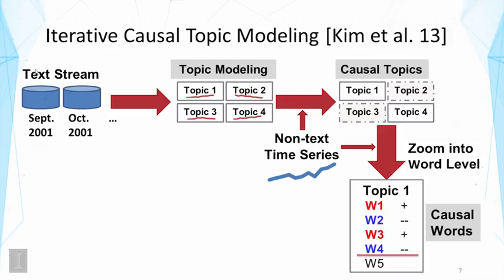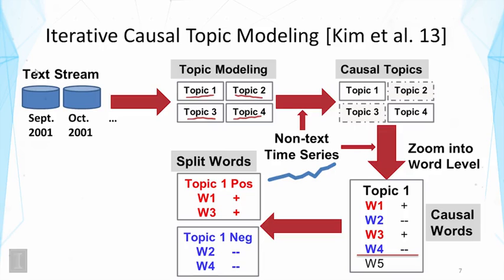But w2 and w4 might be negatively correlated. As a topic, it's not good to mix words with different correlations. So we separate them: red words with positive correlations (w1 and w3) form one subtopic, and negatively correlated words (w2 and w4) form another subtopic. These variations, based on correlation analysis, are topics still related to the original topic one but already deviating because time series information is biasing the word selection — so they should be more correlated with the time series than the original topic.